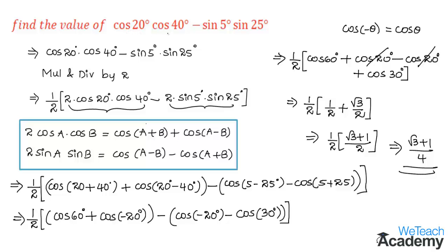Make a note of the key formulas: 2cosA·cosB = cos(A+B) + cos(A−B), and 2sinA·sinB = cos(A−B) − cos(A+B). This was a basic introduction on how to solve such examples using trigonometric product-to-sum formulas. Hope you understood the concept. For more videos visit our website BDJ Academy. Thanks for watching. Have a nice day.